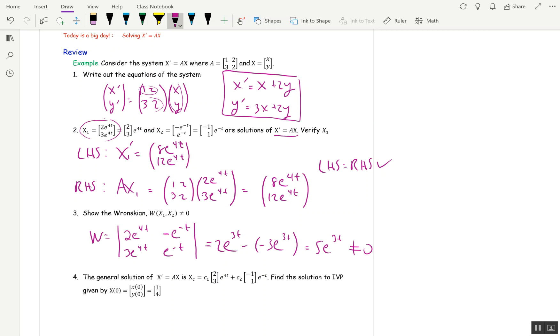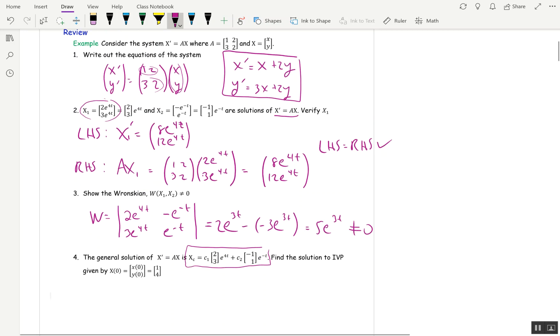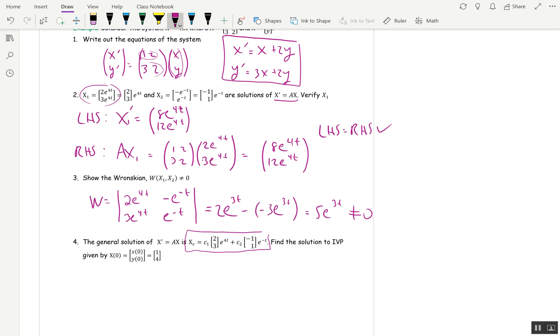Finally, the general solution of the system is given. Find a solution to the initial value problem given by X(0) = (1, 4). On this side, for Xc, meaning the general solution of the homogeneous system, on this side I'm going to put in x(0), y(0).